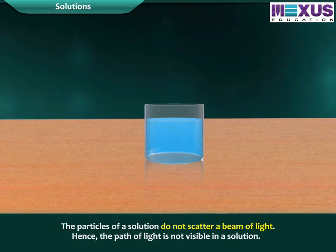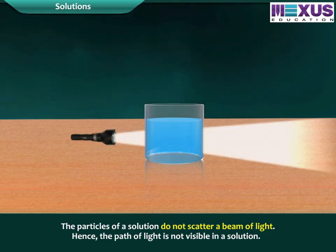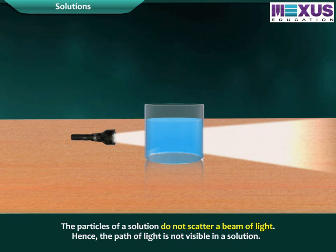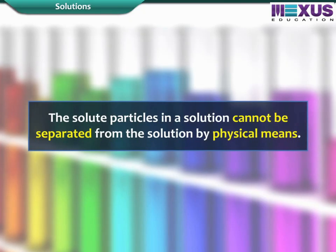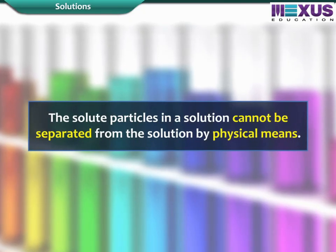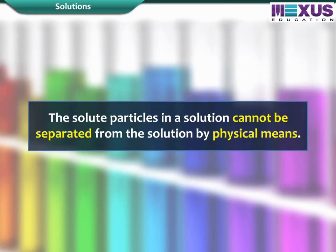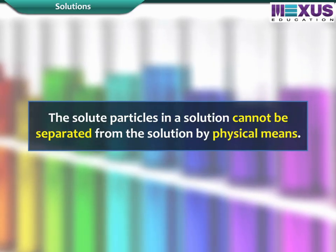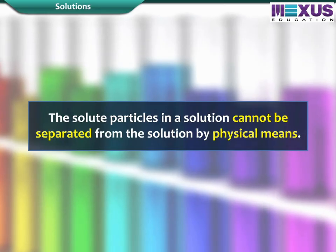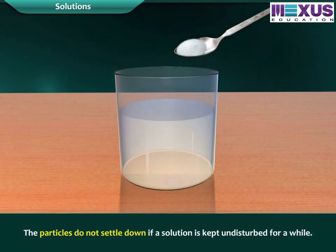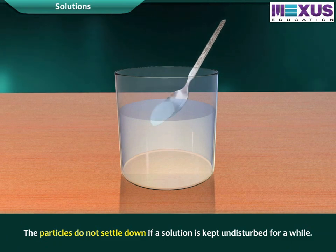The particles of a solution do not scatter a beam of light. Hence, the path of light is not visible in a solution. The solute particles in a solution cannot be separated from the solution by physical means. The particles do not settle down if a solution is kept undisturbed for a while.